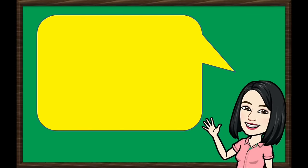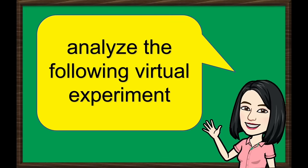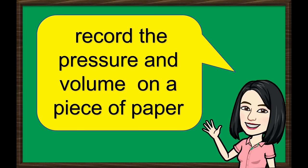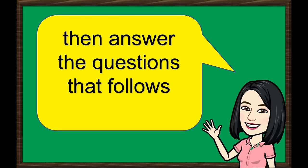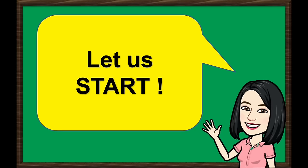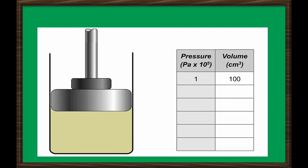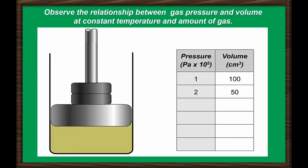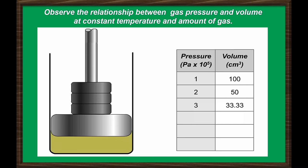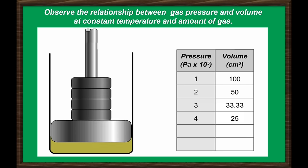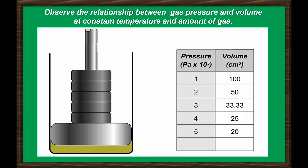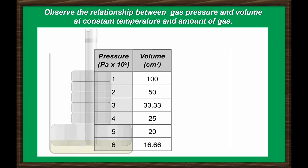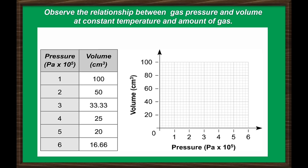Let's have an experiment. Analyze the following virtual experiment. Record the pressure and volume on a piece of paper, then answer the questions that follow. Carefully observe the relationship between gas pressure and volume at constant temperature and amount of gas. You may pause this video as you record the data. If pressure and volume data will be plotted on a graph, it will form this kind of graph. What does it mean?